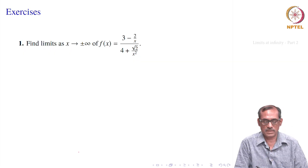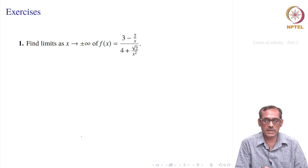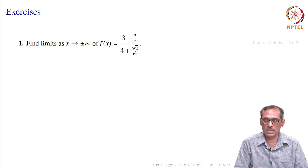Let us go to the problems. The first problem says: find the limits as x goes to plus infinity or x goes to minus infinity of f(x) equal to (3 minus 2/x) divided by (4 plus square root of 2/x²).